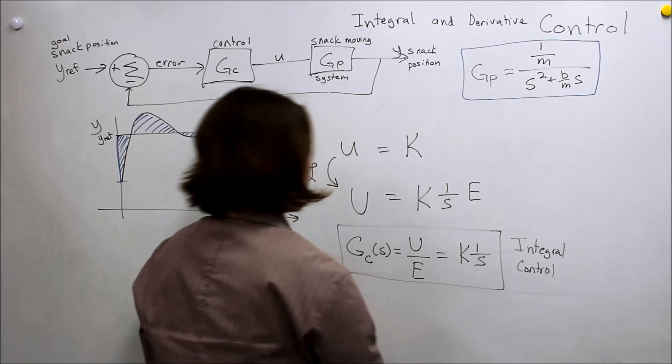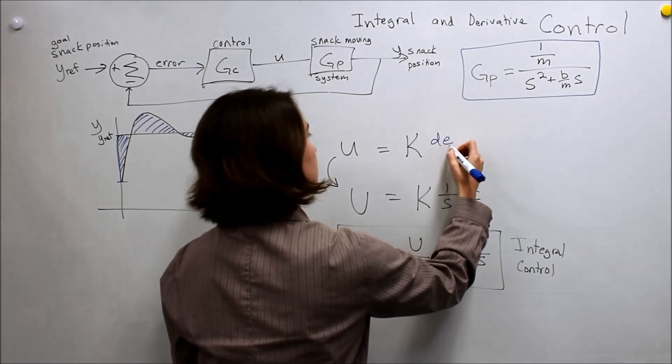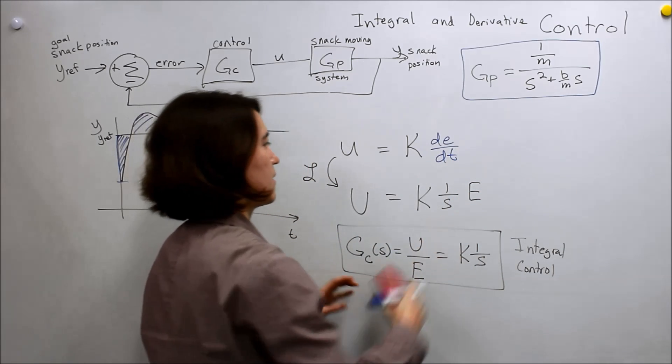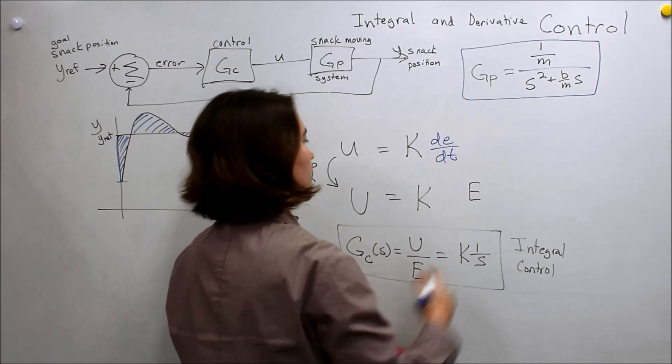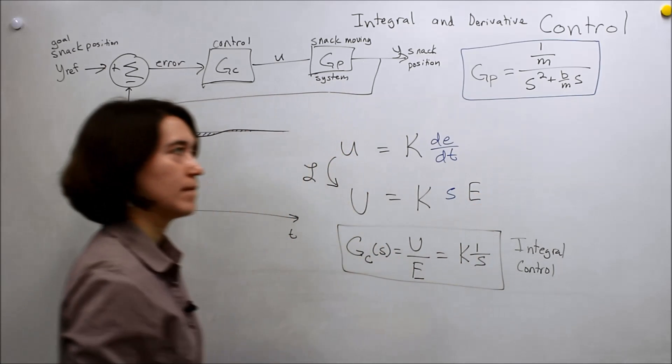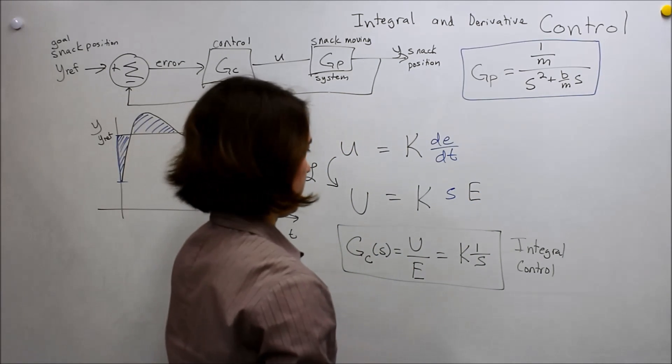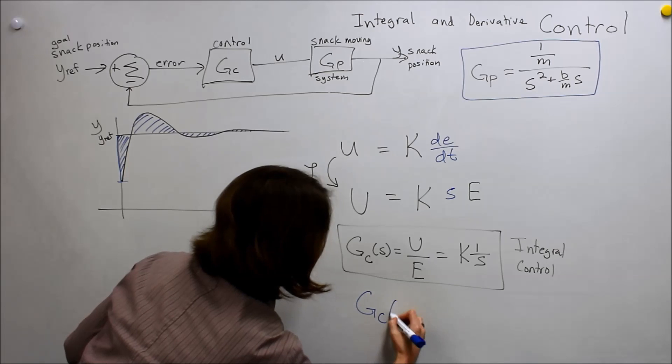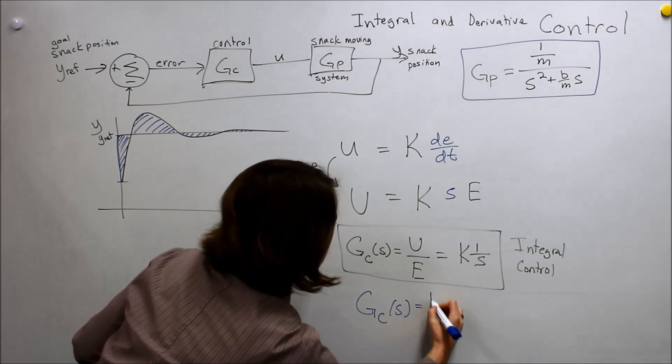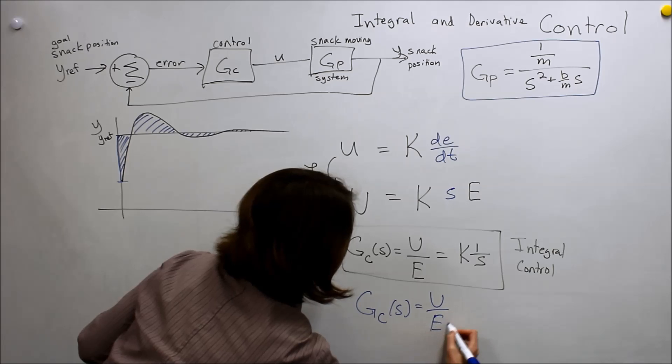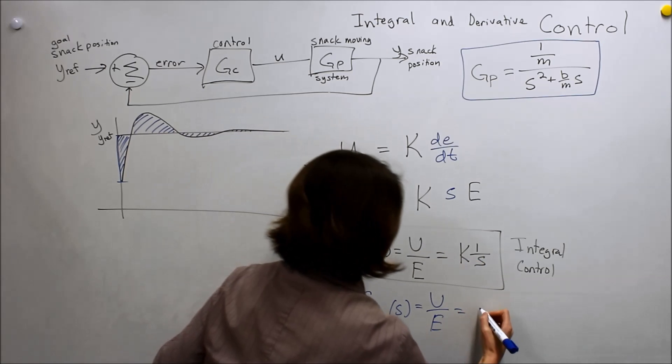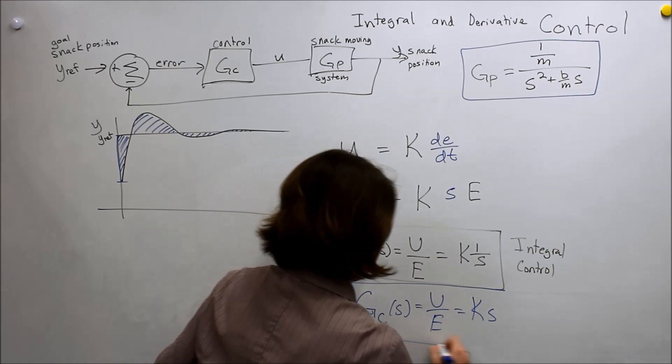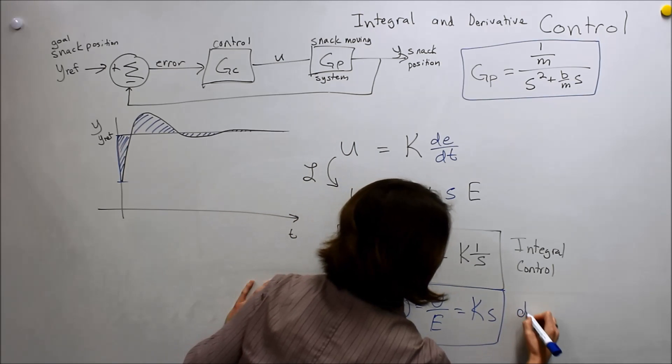So all that really changes here is dE/dt, and when we take our Laplace, instead of 1 over S, we end up getting an S. And then here, I'll just write it down so we have two to compare. So it's simply K times S here. So this is derivative control.